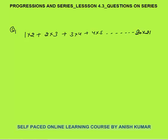Hello, this is Progression and Series lesson 4.3. In this lesson, I will discuss questions on series. The first question is 1×2 + 2×3 + 3×4 up to 20×21. We need to find the sum of this series. Here, as in the previous lesson, I won't break this series into plus and minus — we will find the nth term.